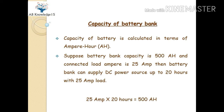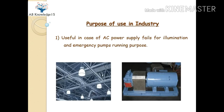Then the battery can supply DC power for up to 20 hours with a 25 ampere load. It is a simple calculation: 25 amperes multiplied by 20 hours equals 500 ampere hours. By this calculation you can determine how many hours your battery bank will supply DC power at a given ampere loading. This is the capacity of the battery bank.